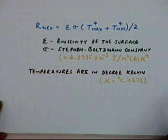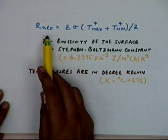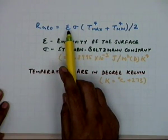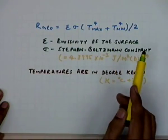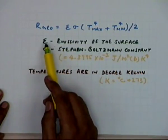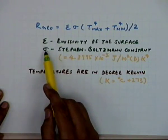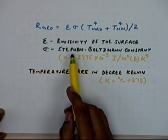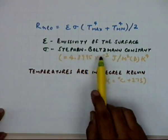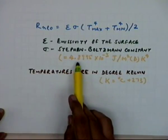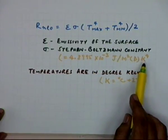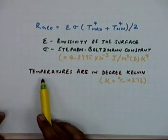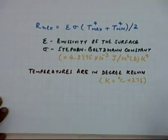Knowing these two quantities, you can find out the empirical constants a and b. First, let's look at RnL0, which is the clear sky net outgoing longwave radiation. This is expressed in terms of eta, sigma, T maximum and T minimum, where eta is the emissivity of the surface. Sigma is the Stefan-Boltzmann constant, with a value of 4.8895 × 10⁻³ joules per square meters per Kelvin to the power 4. Kelvin, as you know, is degrees centigrade plus 273.